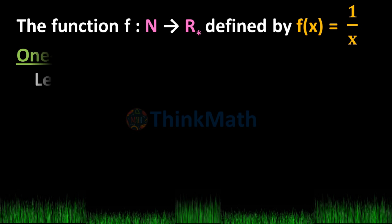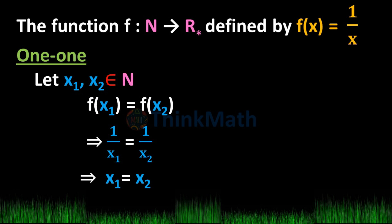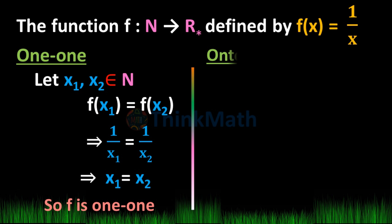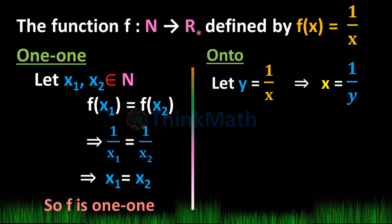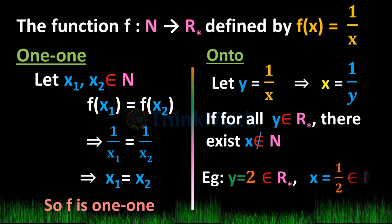Is the result true if the domain R* is replaced by natural numbers N? The function f from N to R* defined by f(x) equal to 1/x is one-one, since 1/x1 equal to 1/x2 implies x1 equal to x2. However, for onto: let y equal to 1/x, so x equal to 1/y. For all y belonging to R*, there exists x not belonging to N. For example, y equal to 2 belongs to R* but x equal to 1/2 is not in N. Therefore, f is not onto.